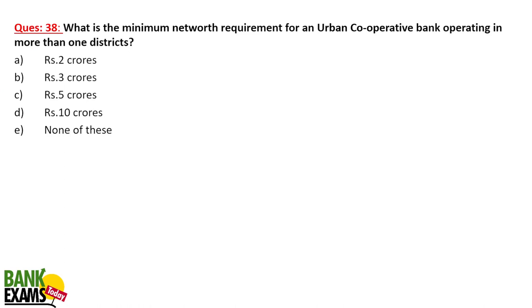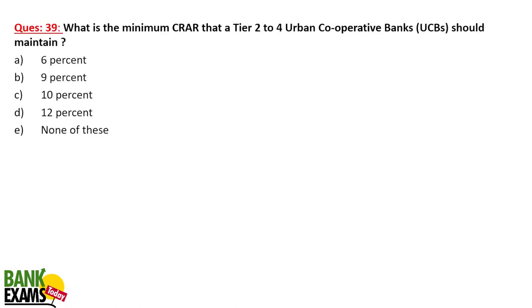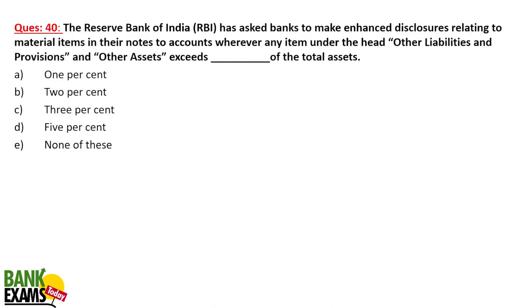What is the minimum net worth requirement for an Urban Cooperative Bank operating in more than one district? It is 5 crores. If operating in only one district, it is 2 crores. What is the minimum CRAR requirement for Tier 2 to Tier 4 Urban Cooperative Banks? It is 12%.